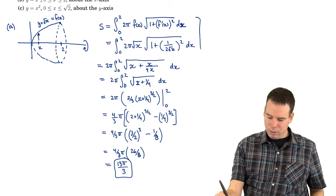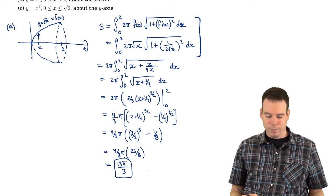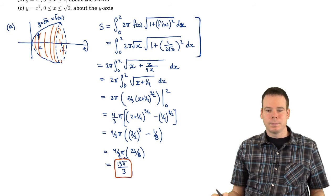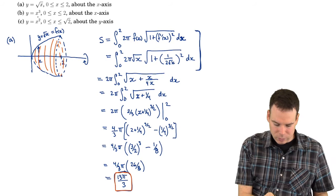Notice the new step here was just getting that integral set up. Once we have the integral set up, it's an exercise in integration and computing the integral. So we found the surface area of the resulting surface — the paraboloid — is 13π/3.